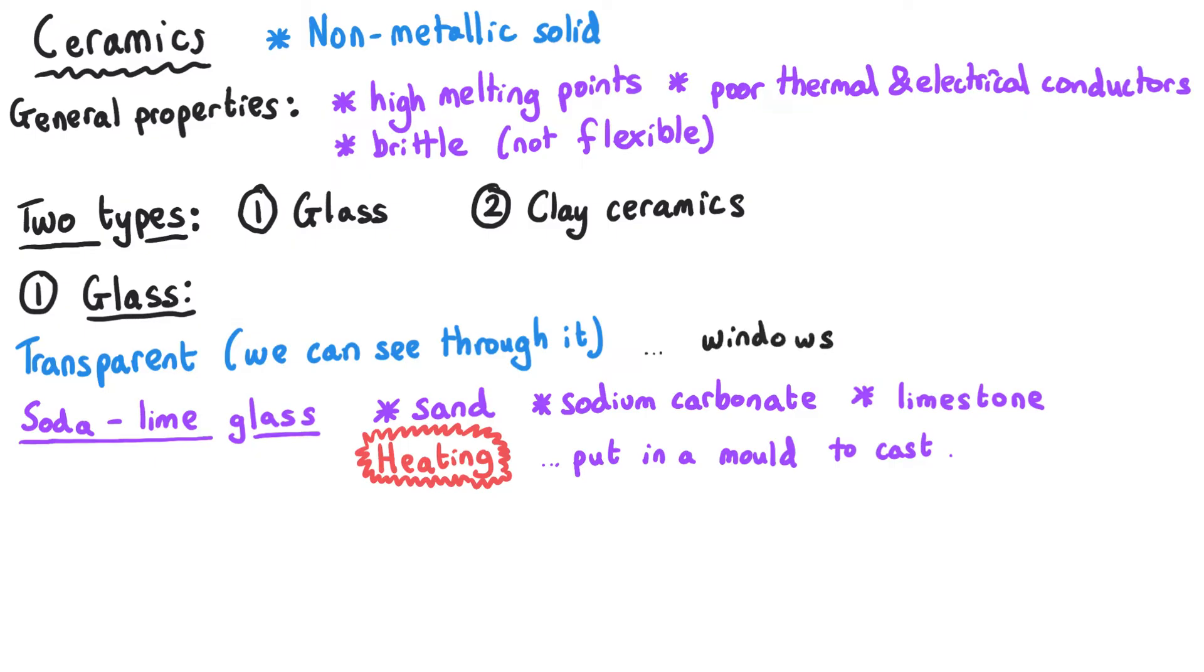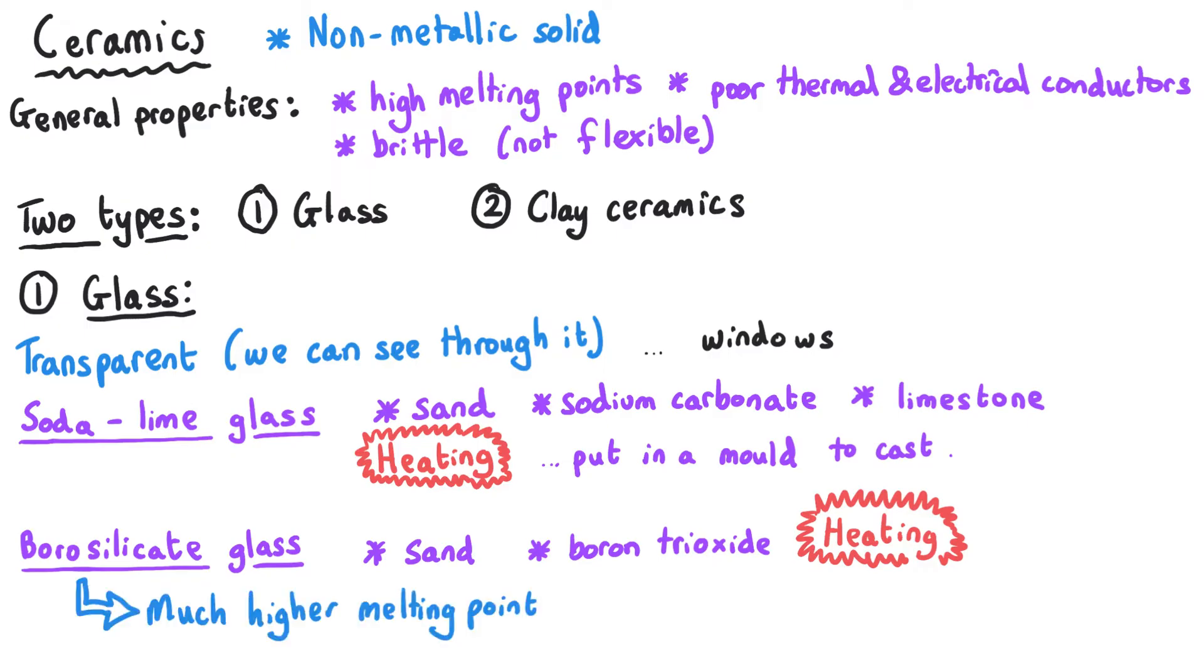Alternatively there is something called borosilicate glass. This is also made from sand but it's made with boron trioxide instead of the sodium carbonate and limestone. As a result of this we get a type of glass that has got a much higher melting point.